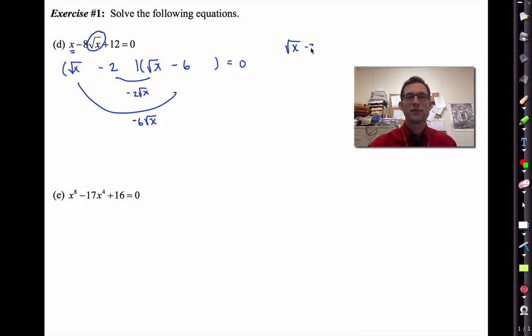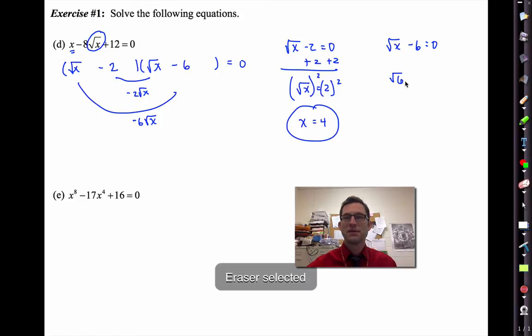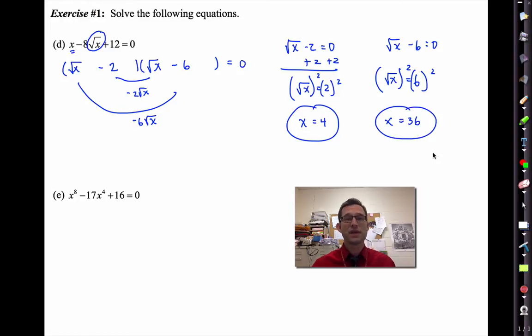That means I now have root x minus 2 equals 0 and root x minus 6 equals 0. I'll add 2 to both sides, get root x equals 2. Square both sides, remember don't take the square root to get rid of a square root, that doesn't work. I'll get x equals 4. Here I'll have root x equals 6, square both sides, and get x equals 36. Don't hesitate to check those answers. With square root equations especially, I'm wary about extraneous roots. Those are both very fine answers, so no issue there.